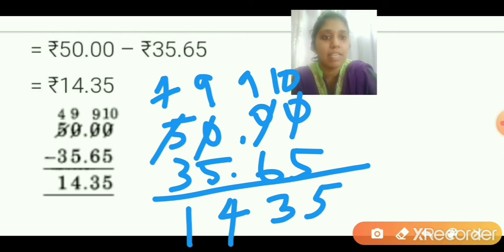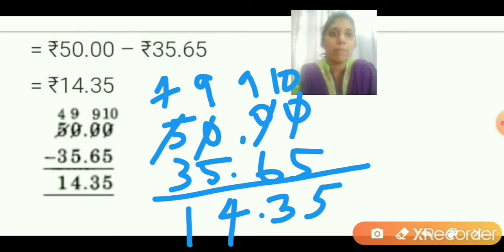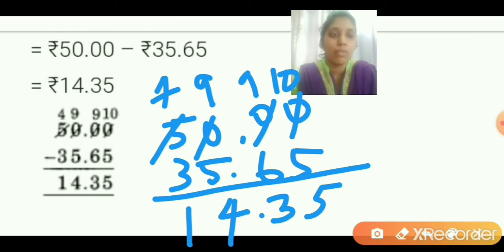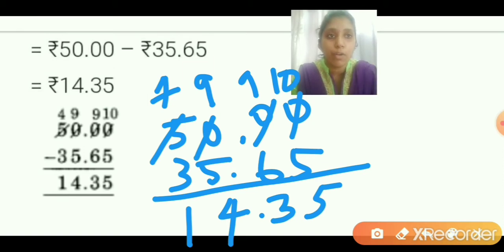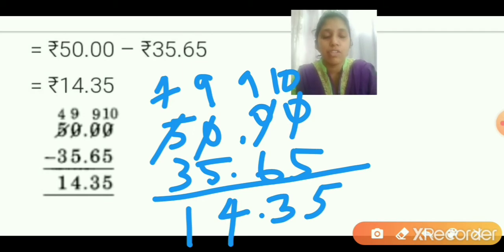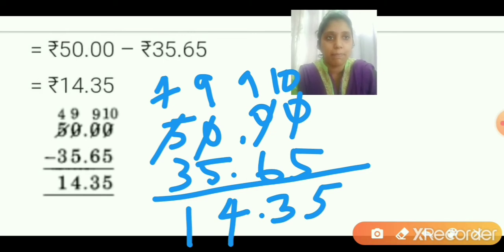The decimal point is before two numbers, so place it before two numbers. So the amount the shopkeeper must give him back is rupees 14.35. So 14.35 should be given back to him by the shopkeeper.